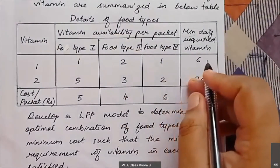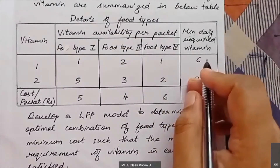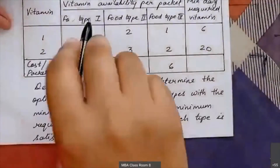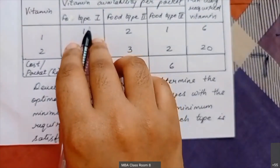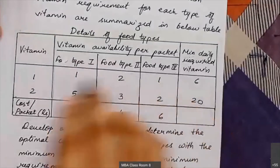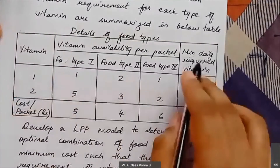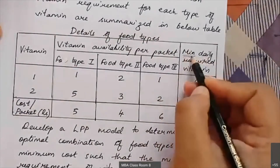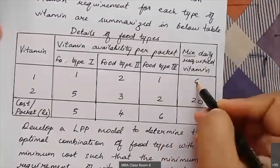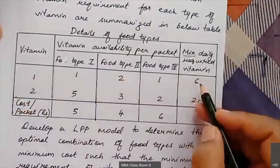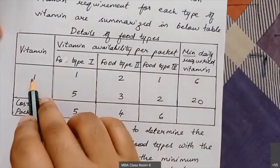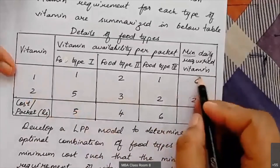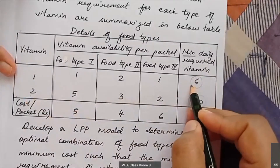If the table is not given in the question, then you will have to draw your own table in the solution. We have three types of foods — food number one, two, and three — and vitamins one and two. The minimum daily requirement of vitamin one is six units, and the minimum daily requirement of vitamin two is 20 units per day.